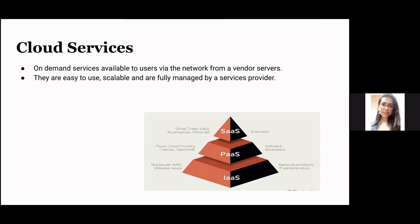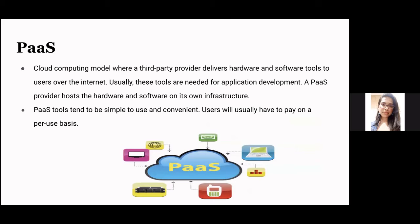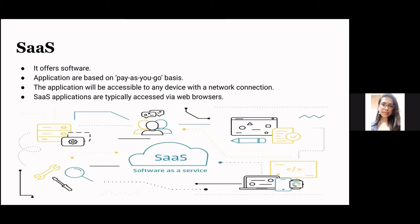We have three different types of services under cloud services used in this project. First is IaaS, which offers hardware environment services, like storage services such as database, disk storage, or virtual servers. Second is PaaS, a cloud computing model where a third-party provider delivers hardware and software tools over the internet, usually needed for application development, and the provider hosts the hardware and software on its own. Third is SaaS, which offers software applications on a pay-as-you-go basis, accessible from any device with a network connection, typically via web browsers.